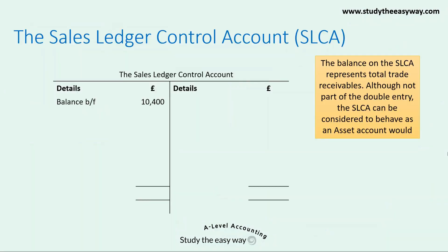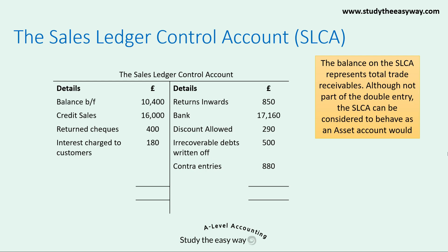Let's continue with the sales ledger control account. The balance on the sales ledger control account represents total trade receivables. Although the control account is not part of the double entry, it can be considered to behave as an asset account would, and therefore the balance brought forward is shown on the debit side. Other items that increase the asset are shown on the debit side too, including credit sales, returned cheques, and interest charged to customers. Items shown on the credit side reduce the asset value: returns inwards, the bank representing customers making payments, discount allowed, irrecoverable debts written off, and contra entries. Contra entries are always shown on the credit side here, with the other side of the double entry going into the purchase ledger.